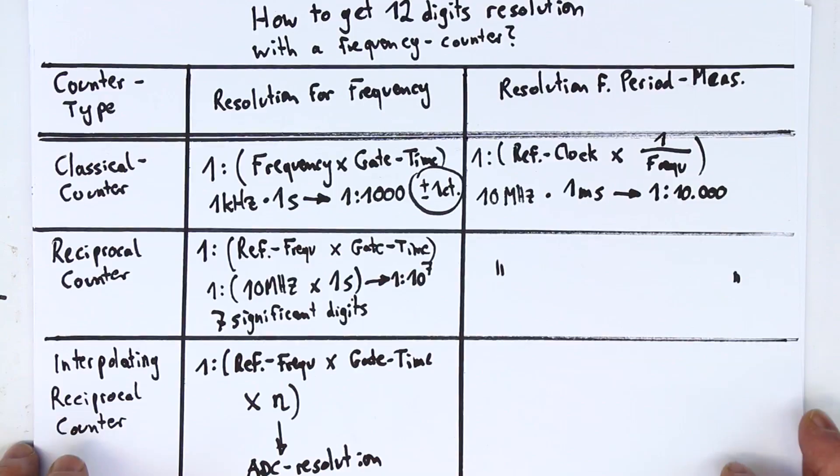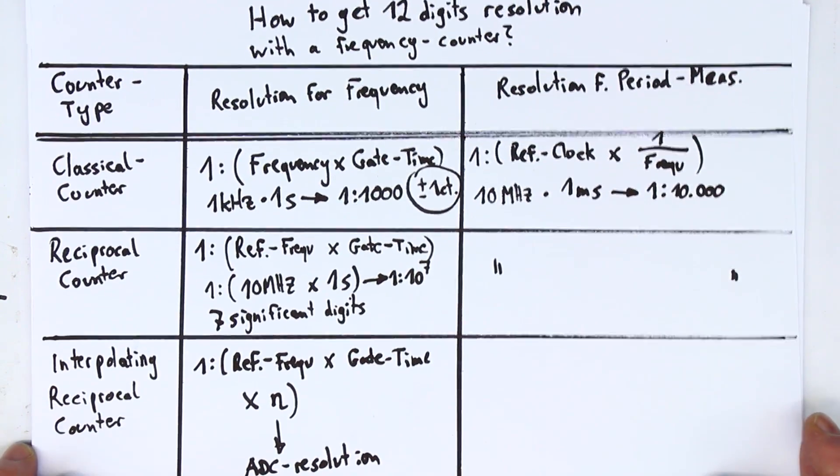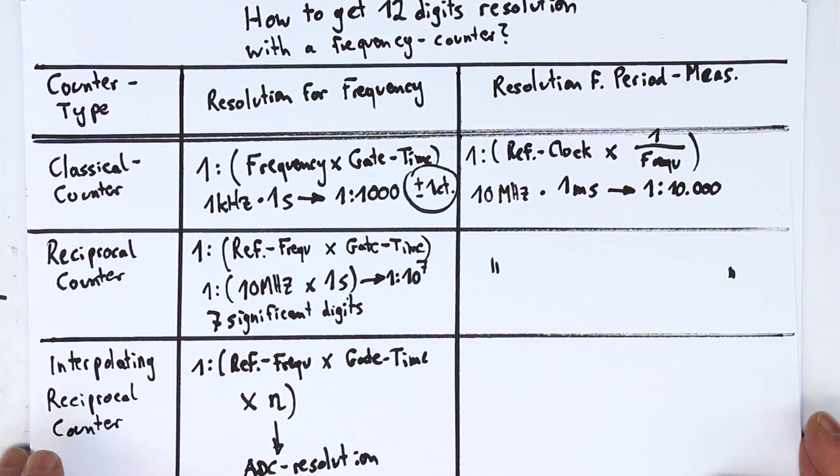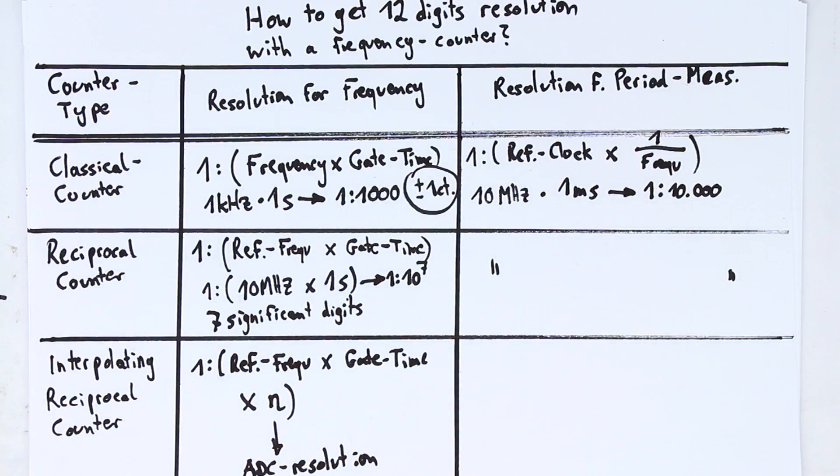So, I know this was quite technical, but it should only whet your appetite. Just take the time and read this HP application note. You probably will, as I did, have to read it three times, because it's very technical. But I've consulted it several times in the last years, and it's really everything you need to know about high resolution counters is explained there in very great detail.